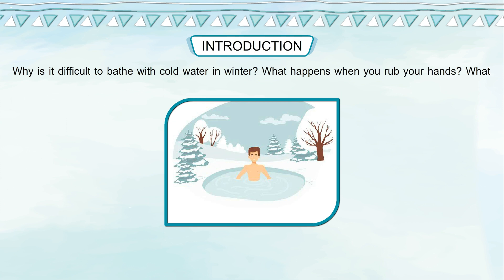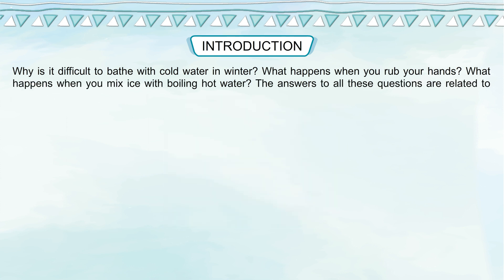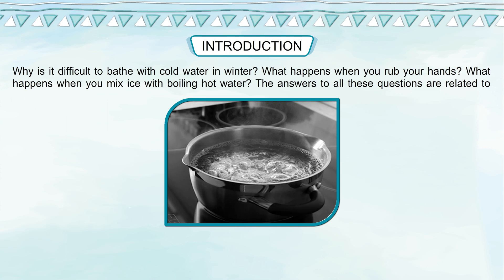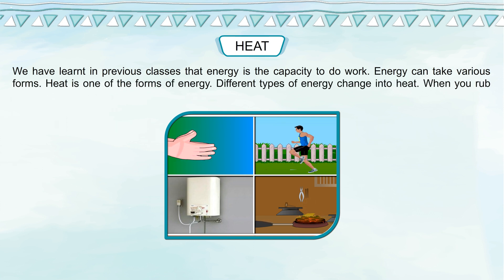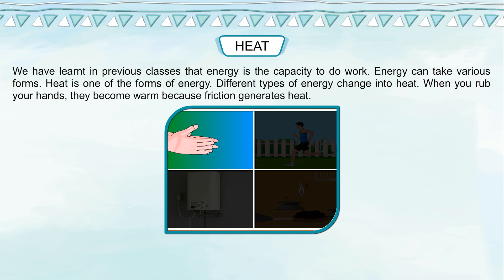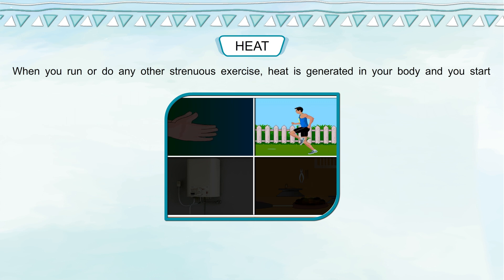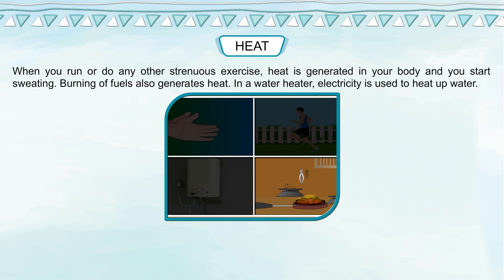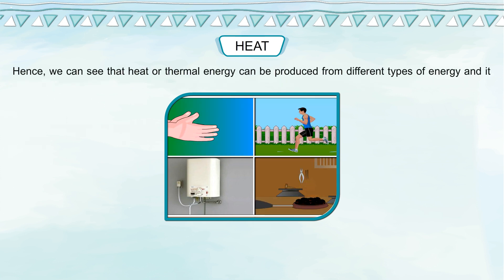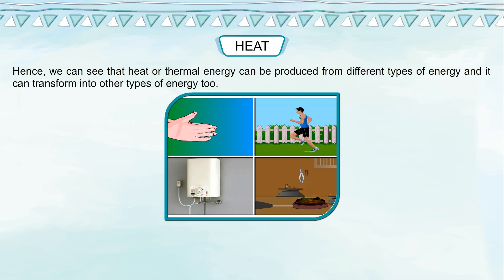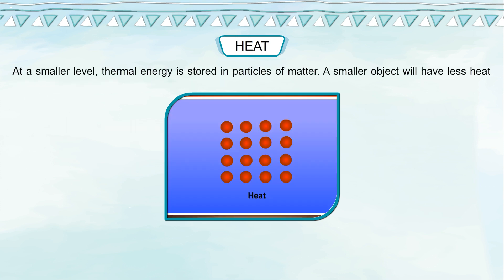Chapter four: Heat. Introduction. Why is it difficult to bathe with cold water in winter? What happens when you rub your hands? What happens when you mix ice with boiling hot water? The answers to all these questions are related to one concept: heat. We have learnt in previous classes that energy is the capacity to do work. Energy can take various forms, and heat is one of the forms of energy. Different types of energy change into heat — when you rub your hands they become warm because friction generates heat, and heat or thermal energy can be produced from different types of energy and can transform into other types of energy too.